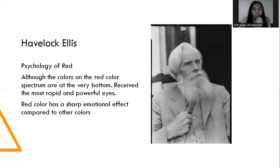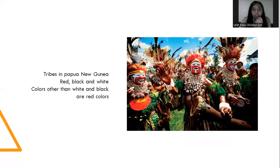Do you know about mental illness and color? Psychology has a statement about the psychology of red. Although the colors on the red color spectrum are at the very bottom, they receive the most rapid and powerful eye response. Red color has the strongest emotional effect compared to other colors. For example, there are three bands in Papua New Guinea — red, black, and white — and the only color other than white and black is red.